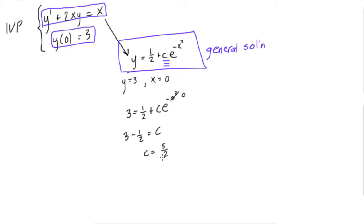So now we know what c is, and we can just plug this actual value back into our general solution, so we get y is going to be equal to 1/2 plus 5/2 e to the negative x squared. And we'll circle this one again, and this is the actual solution.